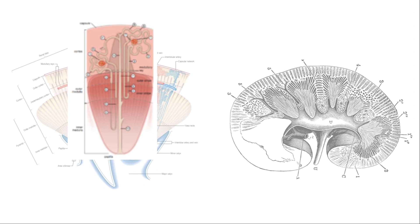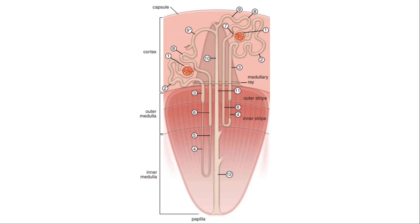The cortical region contains convoluted tubules and collecting ducts, which are straight tubules, along with descending and ascending limbs that loop.